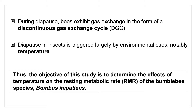Diapause in insects is triggered largely by environmental cues, such as temperature. It is thereby the objective of this study to determine the effect of temperature on the resting metabolic rate, or RMR, of the bumblebee species, Bombus impatiens.